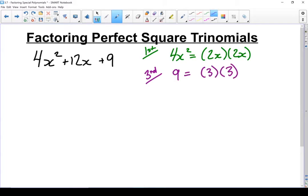So when I go and I look at my second term, I'm going to take this times this and then times it by 2. 2 times 2 times 3 gives me 12 and I've got an x. Because it fits all of those criteria, we have a perfect square trinomial.